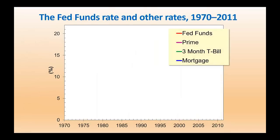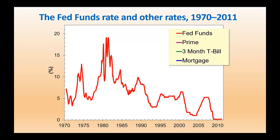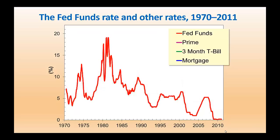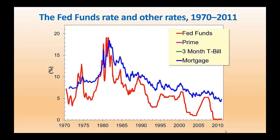Other interest rates tend to follow the federal funds rate. Here we have roughly a 40-year period of the federal funds rate. As you can see, more recent times since the financial crisis, the federal funds rate has been very close to zero. The Fed is trying to encourage banks not to hold onto any excess reserves, but to lend those out. The prime rate is a common short-term interest rate that banks charge for short-term loans, and it tends to mimic the trend of the federal funds rate. A three-month T-bill, which is just a short-term government bond, also tends to mimic the federal funds rate. Even long-term debt, like mortgages, also tends to follow the federal funds rate.